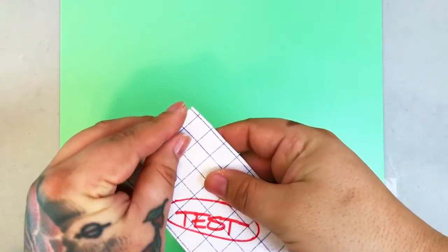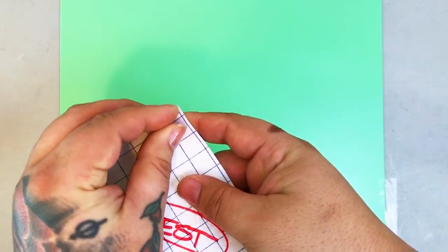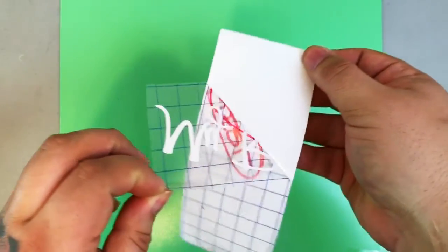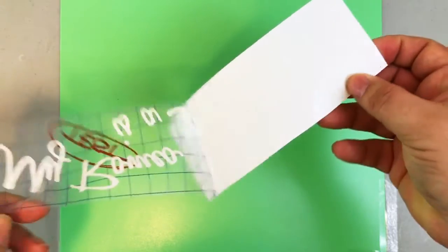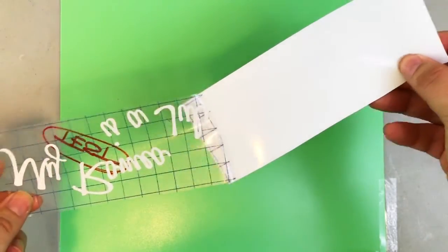Secondly, peel your decal away from the white plastic backing like this. It's important to make sure that the decal doesn't touch any surface until you're ready for it to, because once it sticks, it stays.